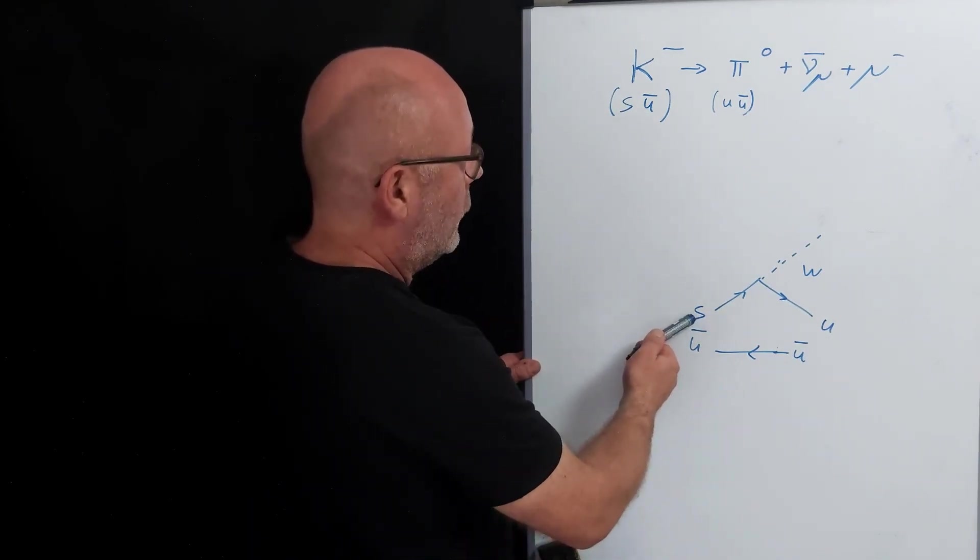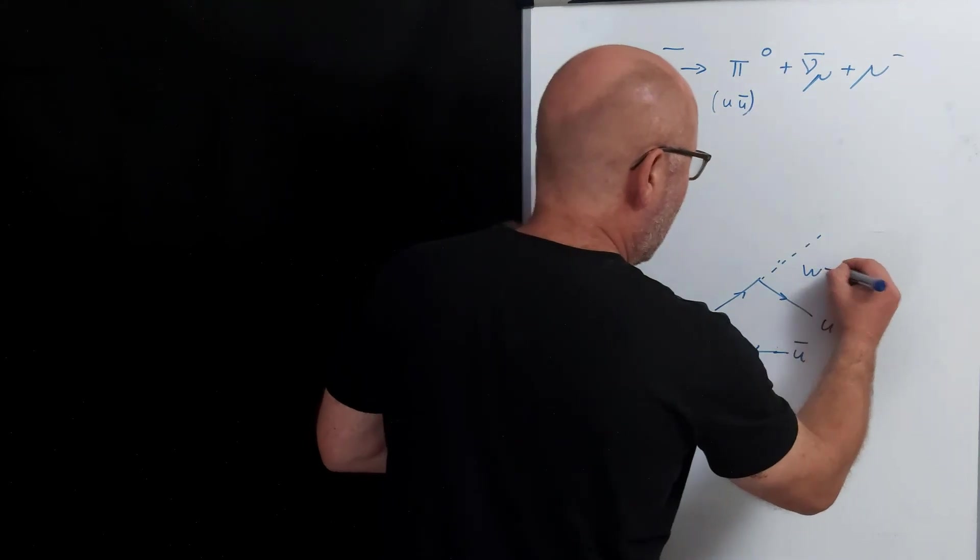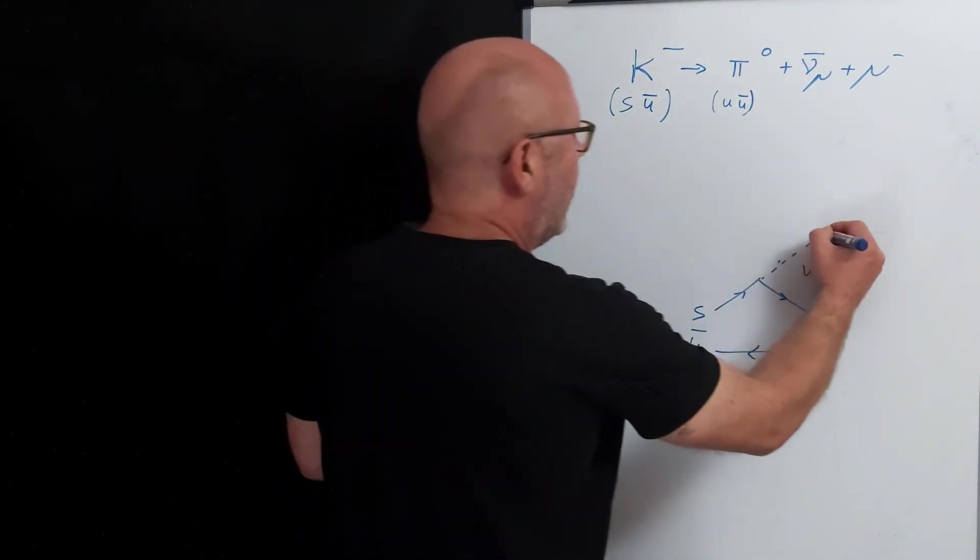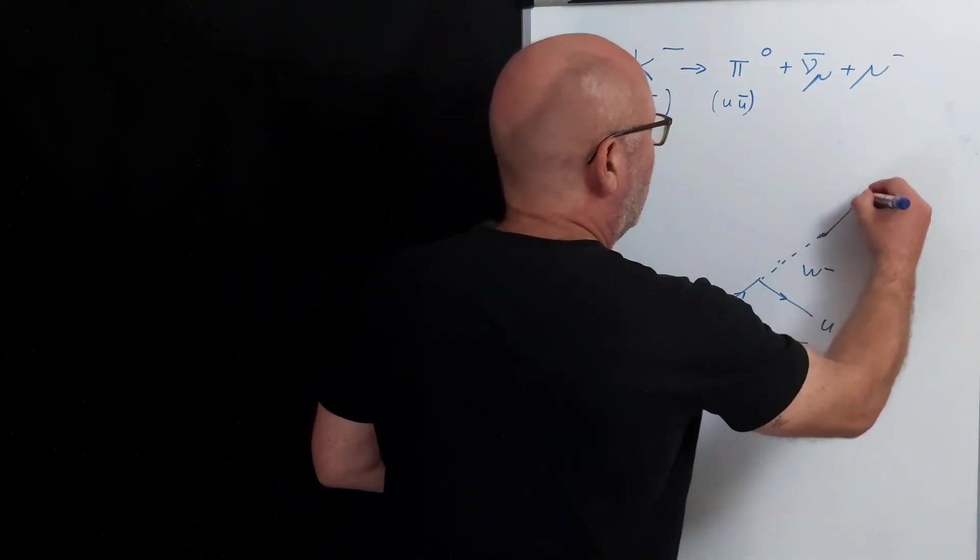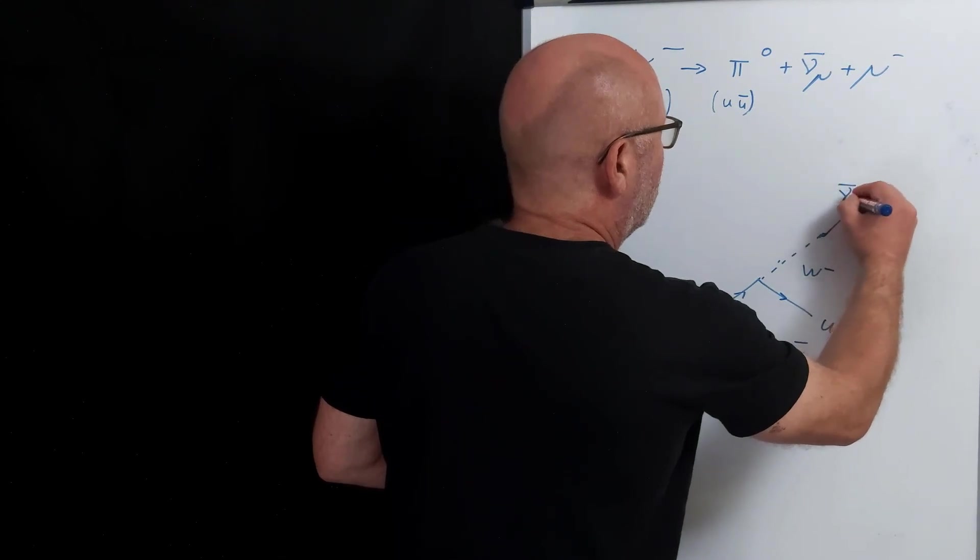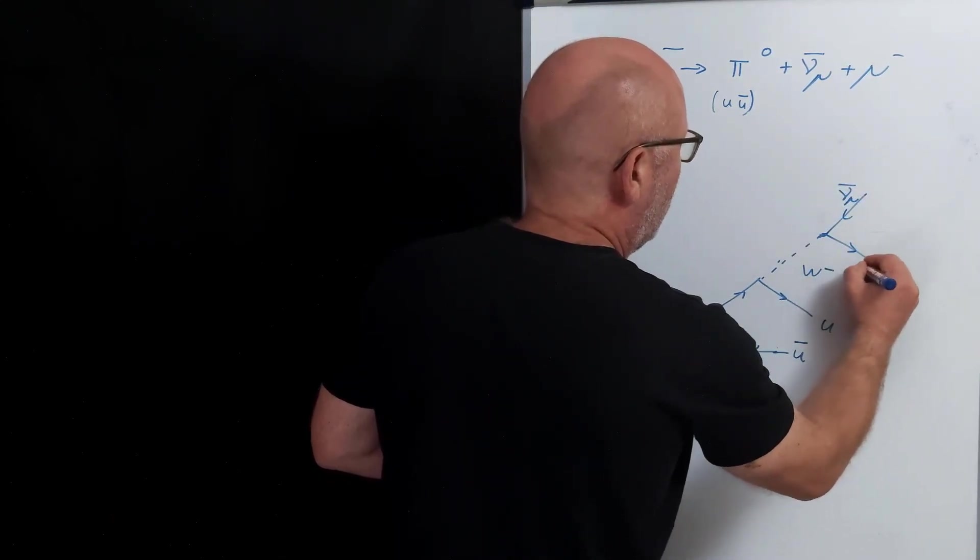So here, minus one-third to two-thirds, so it would be W minus. And then the W will split into the anti-neutrino and the muon.